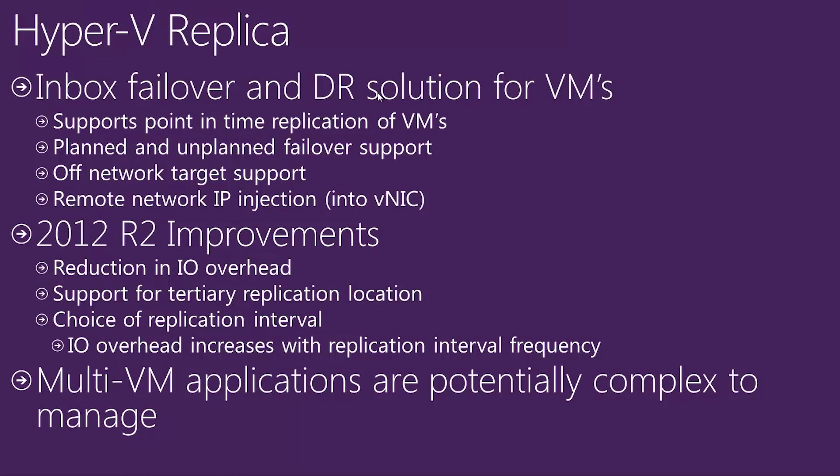In Server 2012 R2, changes were made to improve Hyper-V Replica, including reduction in IO overhead, support for tertiary replication locations — so we can now take this to a third location or third region in Azure, for instance — and the ability to choose the replication interval, down as low as 30 seconds, meeting a lot of the business requirements that exist today.